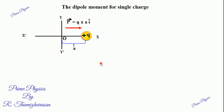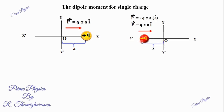The dipole moment is equal to the single charge contribution. For the plus charge, the magnitude of the charge is plus q multiplied by the position vector a·î. For the minus q charge, it is minus q multiplied by minus a·î. Minus into minus gives plus, so the direction is î — that is from left to right, along the x-axis direction.